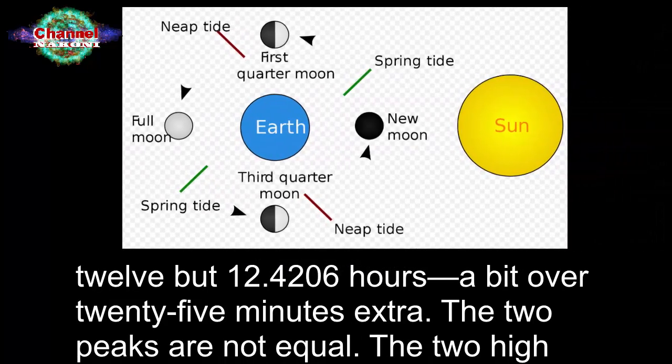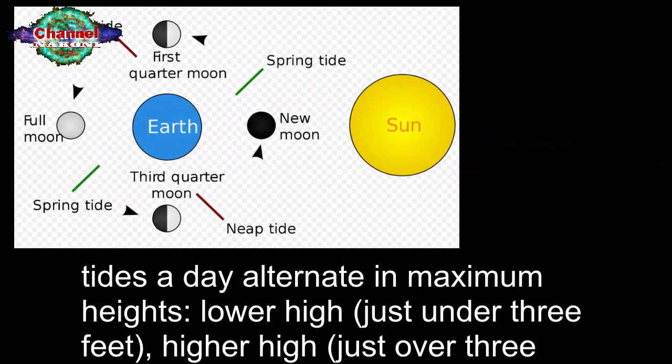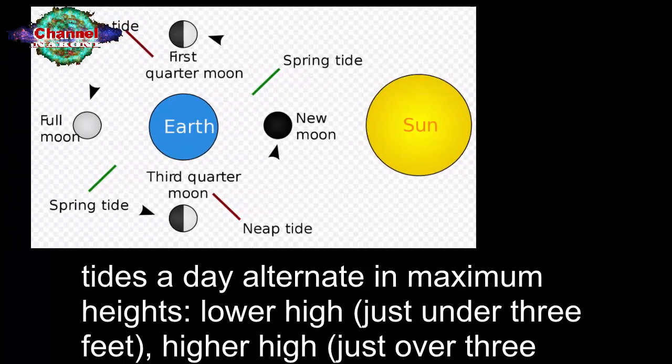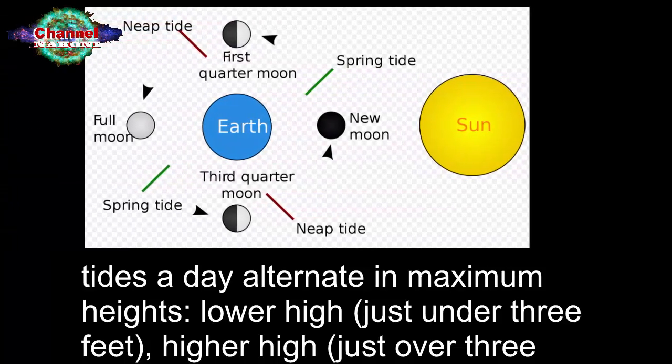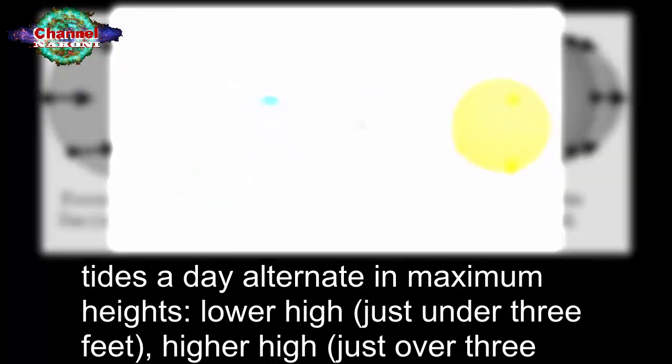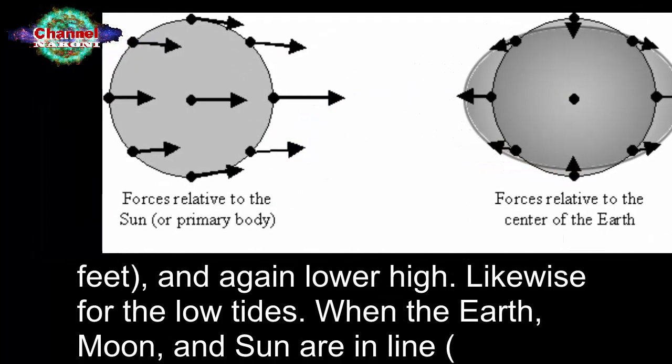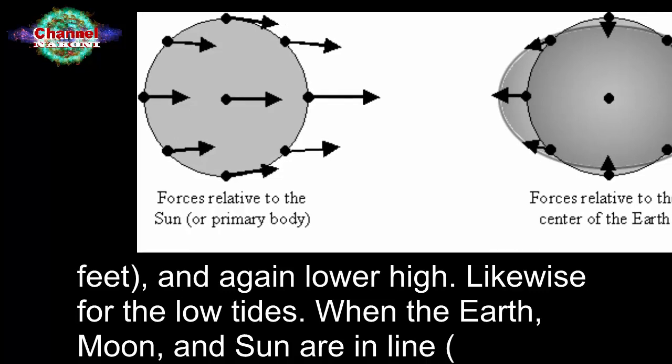The two peaks are not equal. The two high tides a day alternate in maximum heights: lower high, just under 3 feet, higher high, just over 3 feet, and again lower high. Likewise for the low tides.